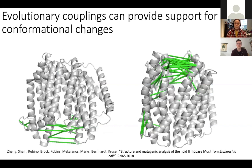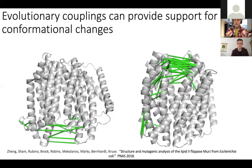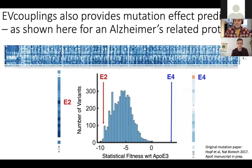We helped our collaborators in Andrew Kruse's lab get the crystal structure by providing a de novo folded model for molecular replacement. We also made a very strong prediction that the transmembrane part of one protein would contact two transmembrane helices in its partner in a very specific way. Two years later they obtained the full crystal structure, and the transmembrane helices interacted exactly as we predicted.